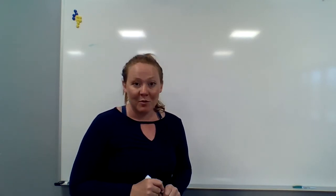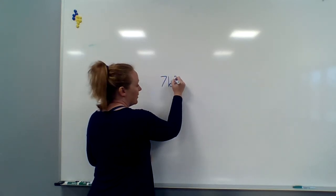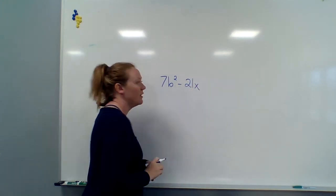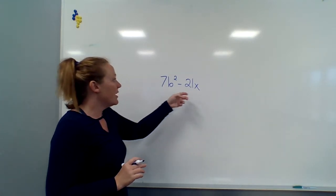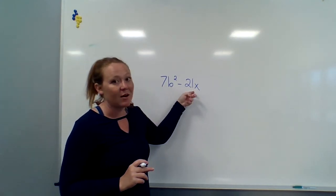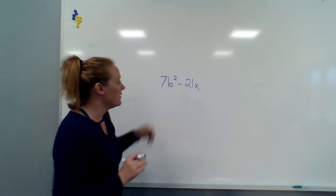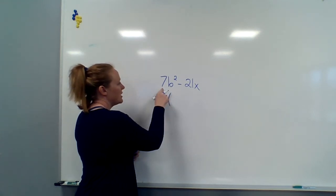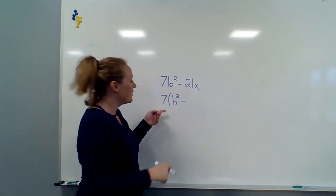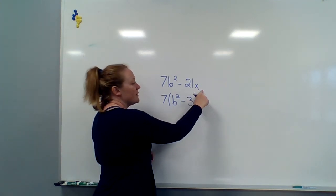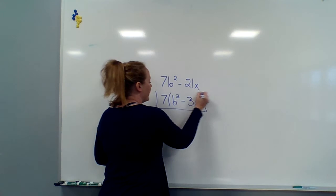The first problem I'm going to work is in the left-hand column: 7b squared minus 21x. Looking at this, you might initially think you're not able to factor it because the variables are different, but if you look at the numbers in front, they have something in common — 7 can go into 21. So we're going to pull out a 7. I get 7 times, and if I take the 7 away from the first term, I'm left with b squared, minus 21 divided by 7 is 3, and then I still have the variable x. That is my finished answer. This is a one-step problem.